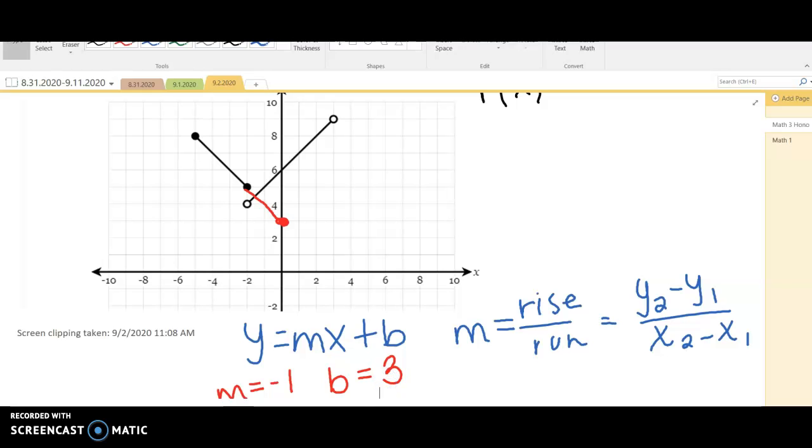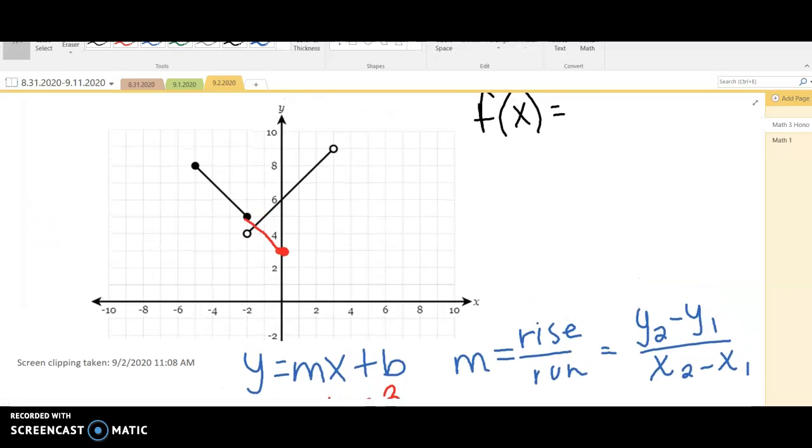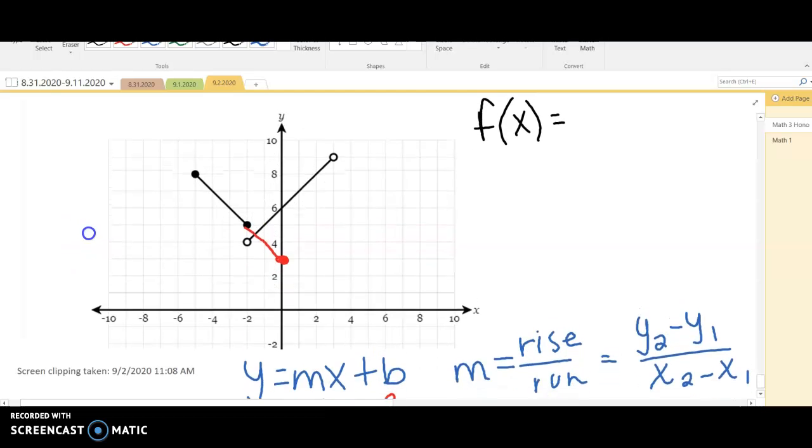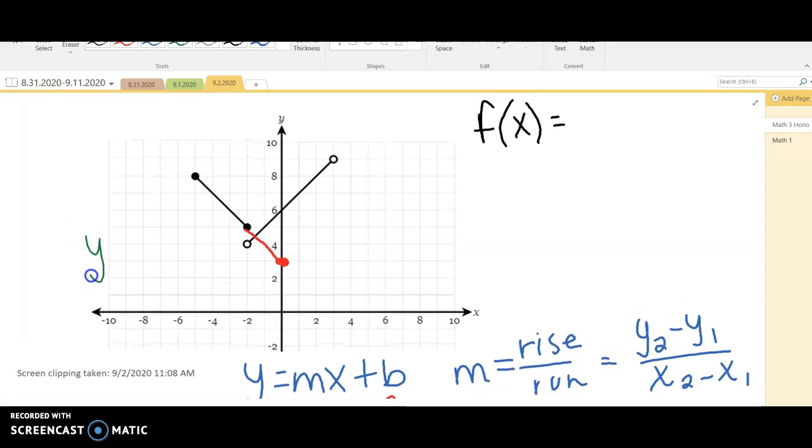So the equation of that first line, we found the slope to be negative 1. y equals negative 1x plus 3. And if we're going to write that as a piecewise, I am going to put it on this side over here. Our piecewise has a huge bracket like that. So I'm going to put the first equation first, negative x plus 3.